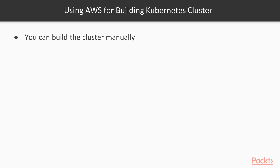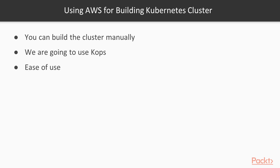You can build the cluster manually — deploy your EC2 instances and use similar mechanisms from the earlier videos to create your entire Kubernetes cluster manually. But this can be a time-consuming effort. There are tools out there which can automate the entire process. For the purpose of our demo, we are going to be using a tool known as kops. This is a popular tool for deploying Kubernetes clusters. One of the biggest advantages is its ease of use — you just define some configuration files for your Kubernetes clusters and you are good to go.